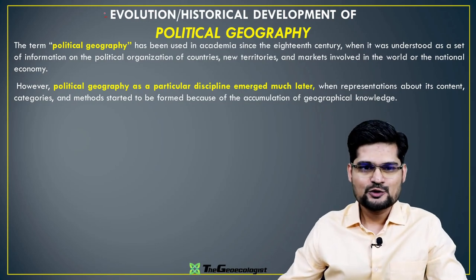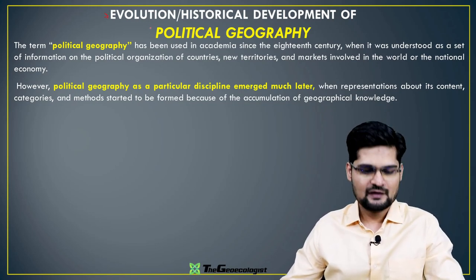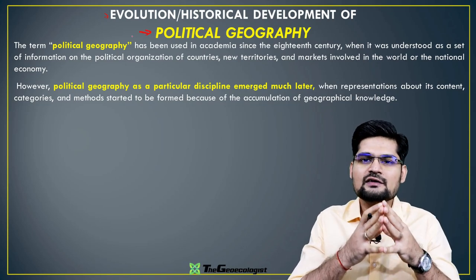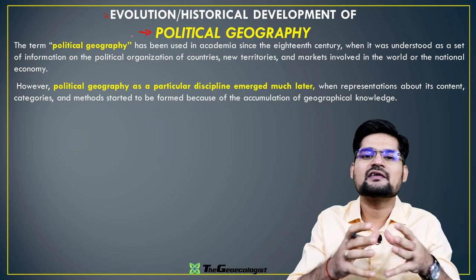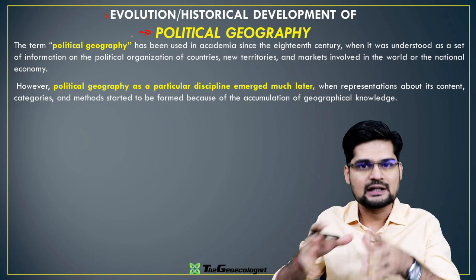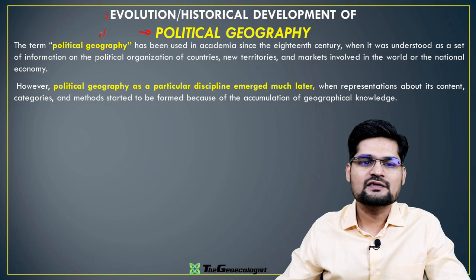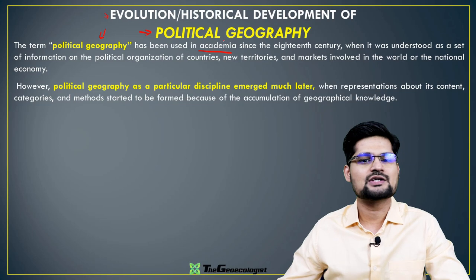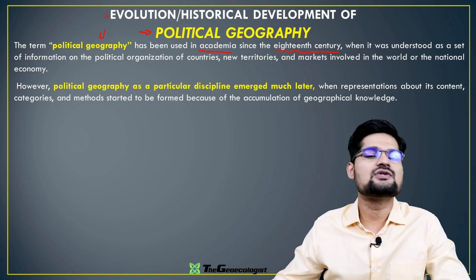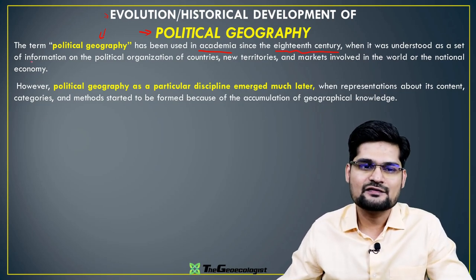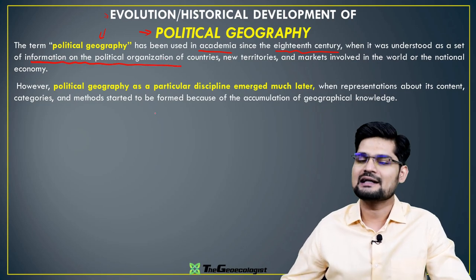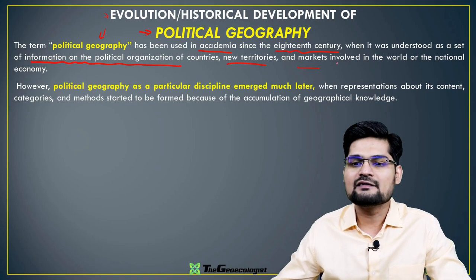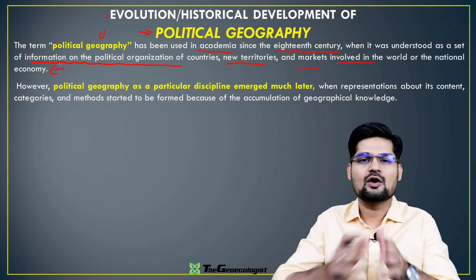Let's learn about the evolution or historical development of political geography. To understand its evolution, we need to talk about the chronology of events from the ancient till today. Political geography as a terminology has been used in academia since the 18th century, when it was understood as a set of information on political organization of countries — new territories, markets, and their role in the national economy.